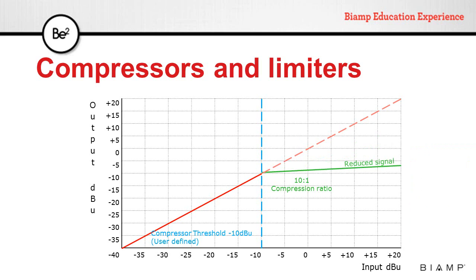If we keep increasing the ratio until we get to big values like 10 to 1, we see that the line after the threshold becomes almost horizontal. In this case, the output level change is very small compared to the input level change.